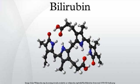Chemistry: bilirubin consists of an open chain of four pyrrole-like rings. In heme, these four rings are connected into a larger ring called a porphyrin ring. Bilirubin can be conjugated with a molecule of glucuronic acid, which makes it soluble in water. This is an example of glucuronidation.